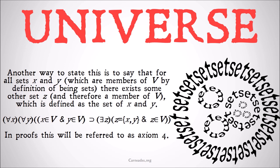In proofs, this will be referred to just simply as axiom 4. So basically, we're saying that if X is a set and Y is a set, then there exists some set Z, which is just X comma Y.